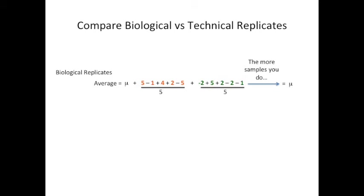Now let's compare biological versus technical replicates. As you'll recall, when we have biological replicates, the average read count for gene X equals mu plus two fractions, one for the biological variation and one for the technical variation. Because these fractions contain both positive and negative numbers in the numerator that cancel each other out, we know that both of these fractions will get smaller and smaller and closer to zero with each additional sample that we add. Thus, the final average read count will tell us something about all mice.